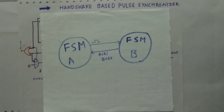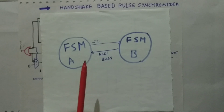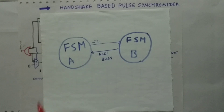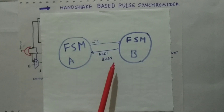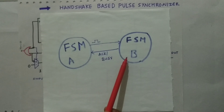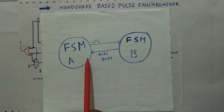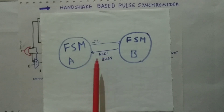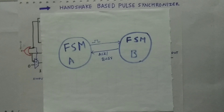To avoid the confusion of receiving multiple pulses in a short time, we use a handshake mechanism. In this mechanism, an ACK or busy signal is sent by FSM-B to FSM-A, and based on this, FSM-A decides whether to send the next pulse or not. Now let us look at how a handshake based pulse synchronizer works.